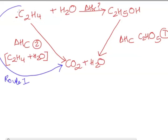Now route 2 goes from ethene and water by forming ethanol which is then combusted to give us CO2 and water. So that's route 2.